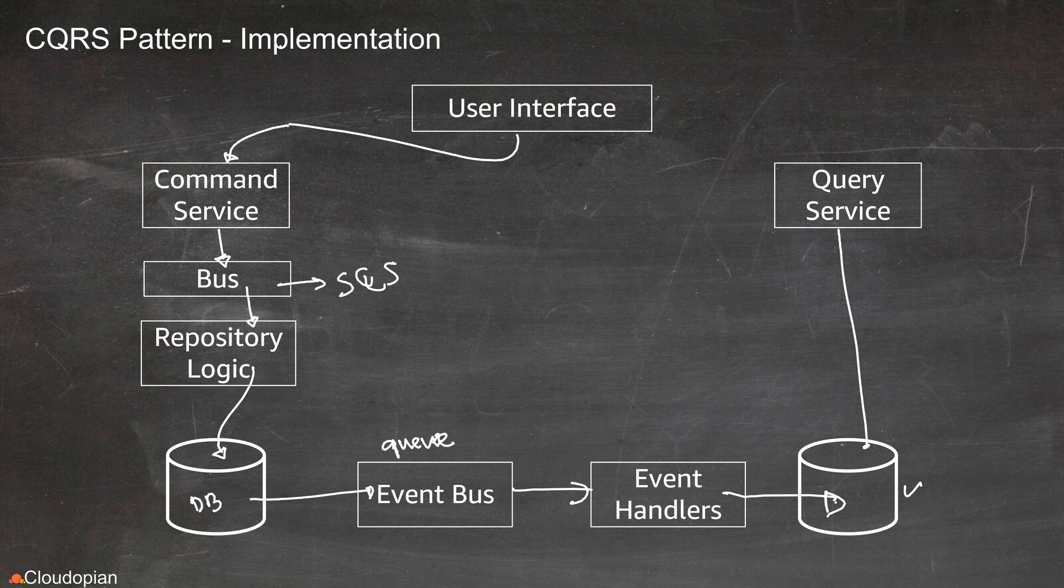This event handler may also perform some data transformation. For example, in the previous example, we discussed that the authors are going to keep different versions of the news article that they are going to publish. They may also keep author information, which is not necessary for the readers. In that case, the event handler may format that data and then save it into the query service storage. For example, it may do some transformation and then create a very simple JSON file that it's going to save.